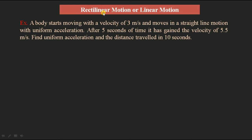So the body starts with initial velocity 3 m/s and after 5 seconds with constant acceleration it reaches 5.5 m/s. We need to find the uniform acceleration, and after 10 seconds how much distance has been covered. Let us write the given data.